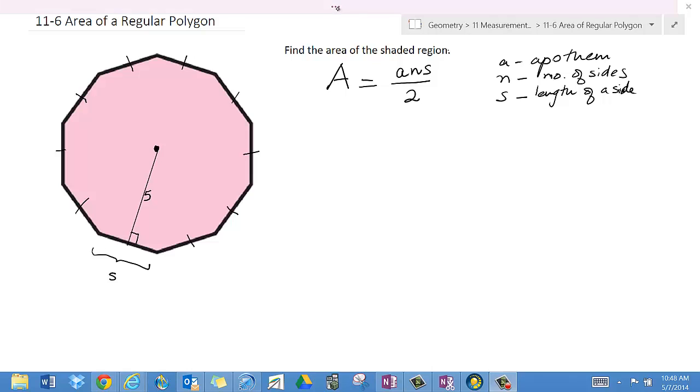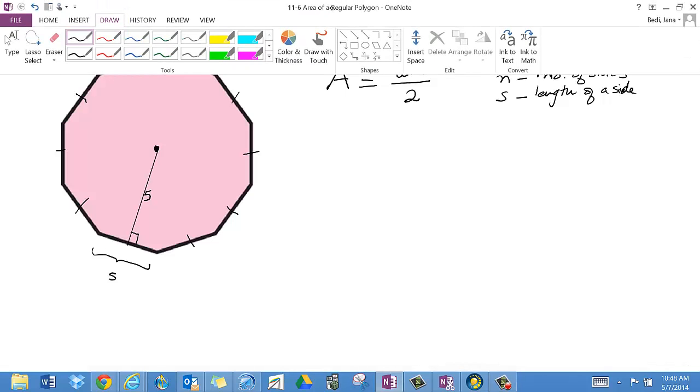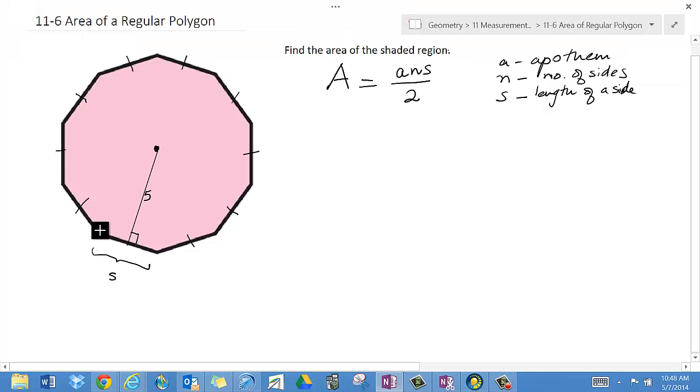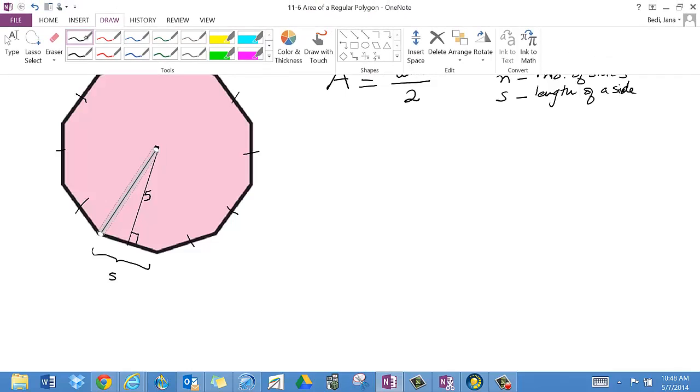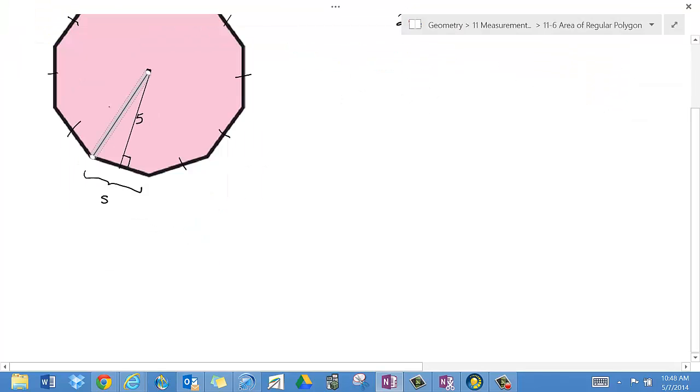I know that a regular polygon can be inscribed in a circle. So what I'm going to do is connect a vertex to the center of the circle. Since all the vertices lie on the circle itself, what I have just drawn is a radius, and let me mark that with R.